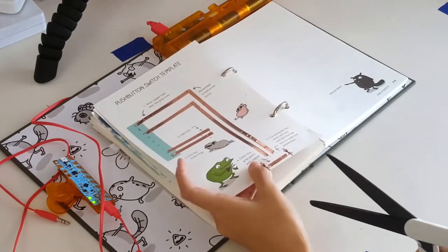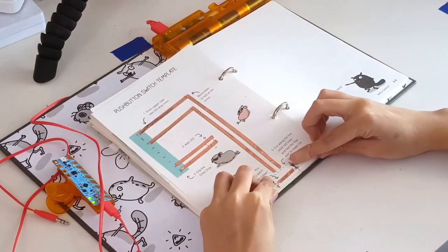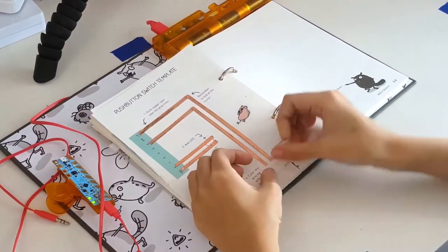Now take a pair of scissors and cut along the red lines, and fold on the dotted line. You've made a switch!